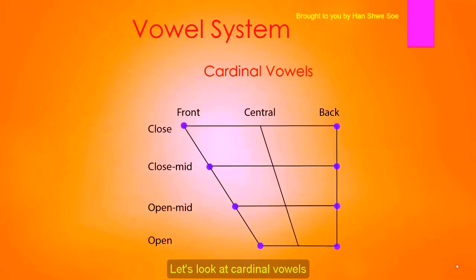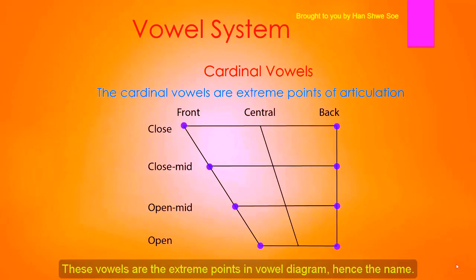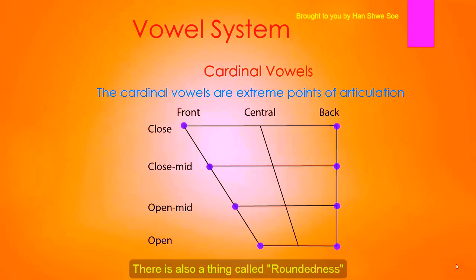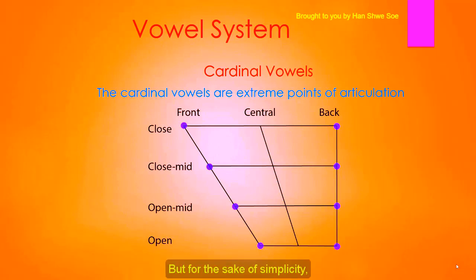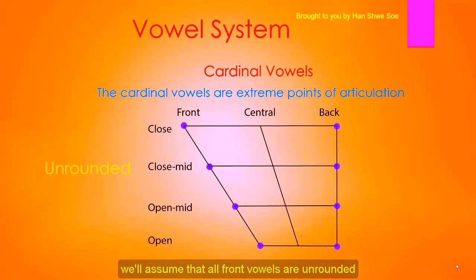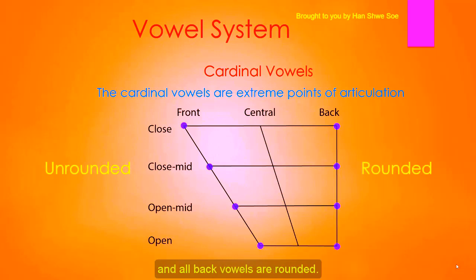Let's look at cardinal vowels. These vowels are the extreme points in the vowel diagram, hence the name. There is also a thing called roundedness, which means the rounding of lips. For simplicity, we'll assume that all front vowels are unrounded and all back vowels are rounded.